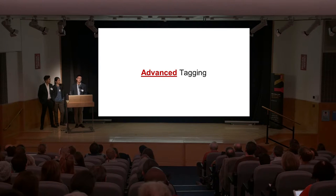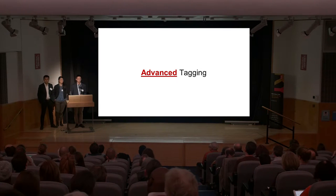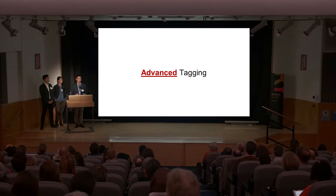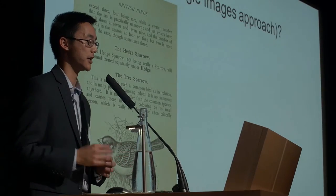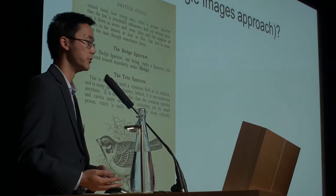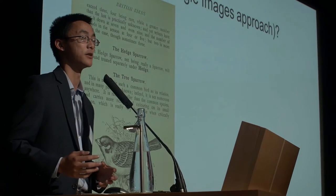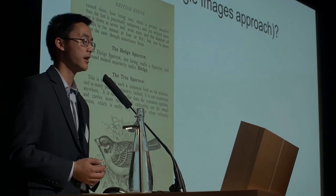For advanced tagging, we thought about how to get more than one tag per image. One strategy was to use optical character recognition — the surrounding text around the image. This is sort of the Google Images approach: if you look for a cat in Google Images, it looks for all webpages that have the word 'cat' on them and gives you the pictures it thinks are cats. So we took the OCR, and using the example of a tree sparrow, we took all the words on the page and filtered for noun phrases.